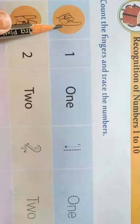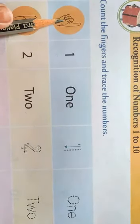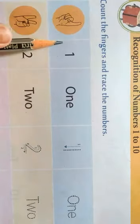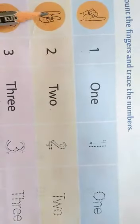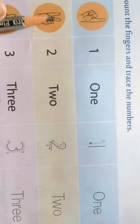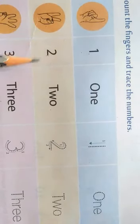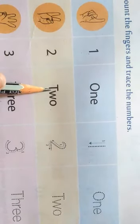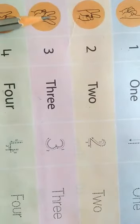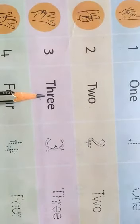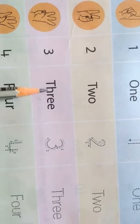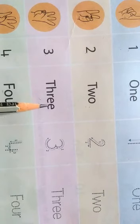Look at the first finger. This is 1. O-N-E, 1. This is 1-2, so this is 2 fingers. T-W-O, 2. 1-2-3, so we write 3. T-H-R-E-E, 3.